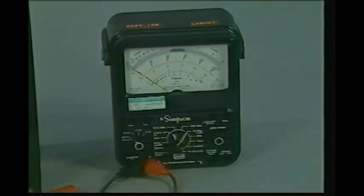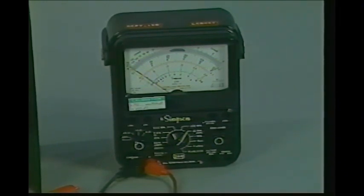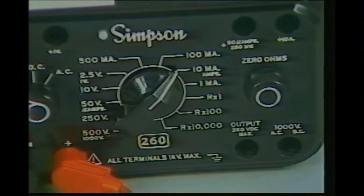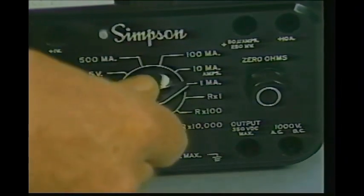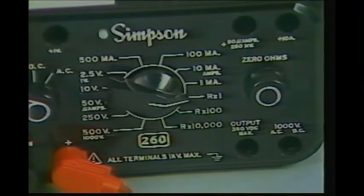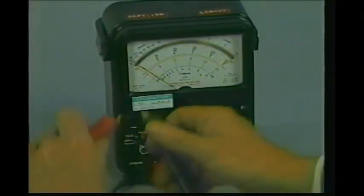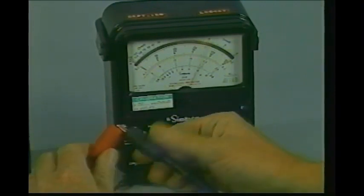To make a field test of the rectifier assembly, you'll need an analog meter. The analog meter has an R times one scale. This scale is used for testing diodes. The first step is to set the meter on the R times one scale. Short the meter leads together and zero the meter.